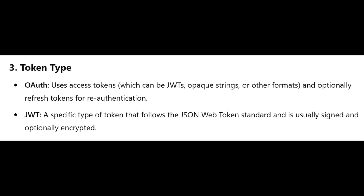Token type — OAuth uses access tokens, which can be JWTs, opaque strings, or other formats, and optionally refresh tokens for re-authentication. JWT is a specific type of token that follows the JSON web token standard and is usually signed and optionally encrypted.